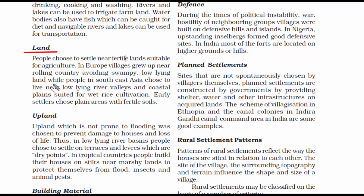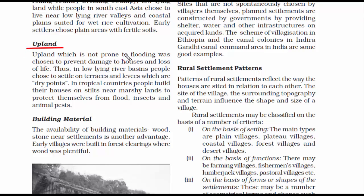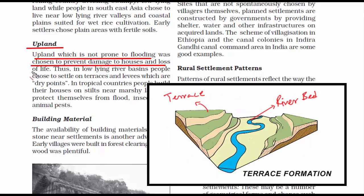The second factor is land. Due to agricultural needs, people in rural areas settle near fertile lands suitable for agriculture. That's why many places around the world have settlements in low-lying valleys where rivers flow — plain low-lying areas are suited for wet rice cultivation. The third factor is upland. While rural settlements are often at low-lying valleys, to avoid flooding, people chose to settle at terraces and levees, which are dry points. Terrace formation is a step-like landform created to avoid flooding, and it also helps protect people from insects and animals.